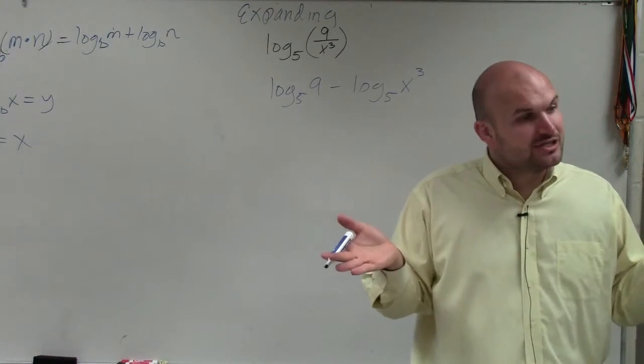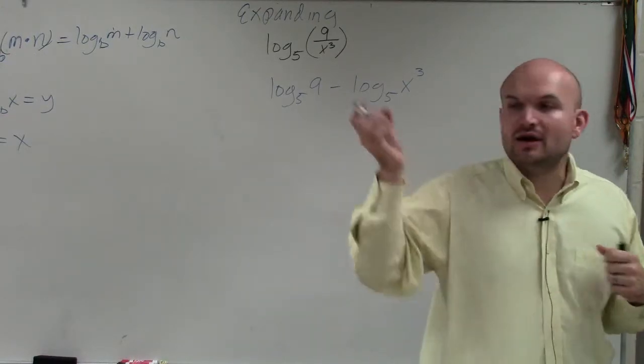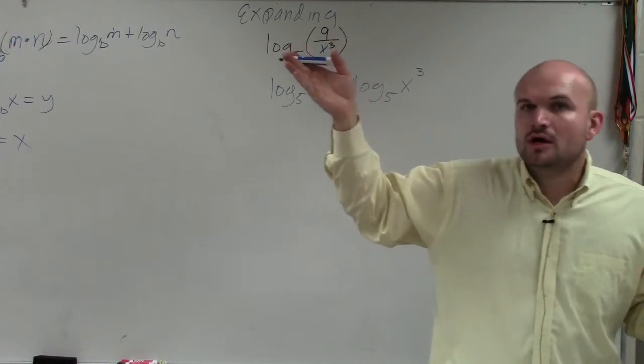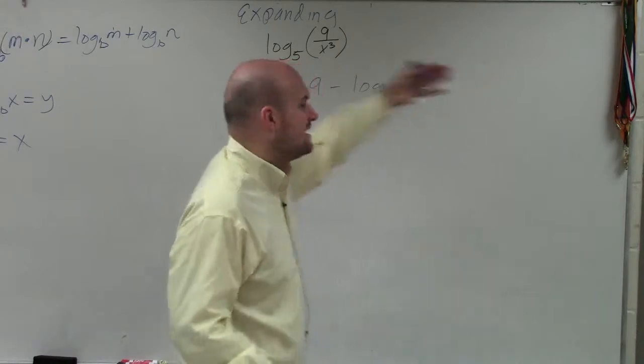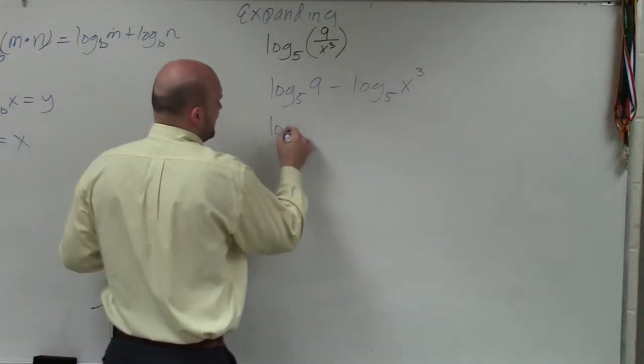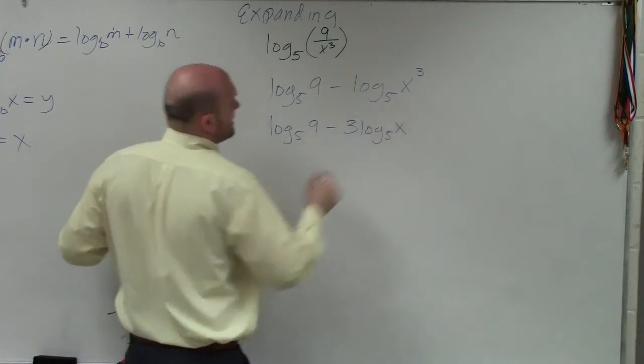Now that I have them separated using subtraction of two logarithms, now what I can simply do is go ahead and take the power. I can use the power rule, which, again, the power rule states whenever I have the power in my logarithm, I can rewrite that as the product in front. So my final answer would be log base 5 of 9 minus 3 log base 5 of x.